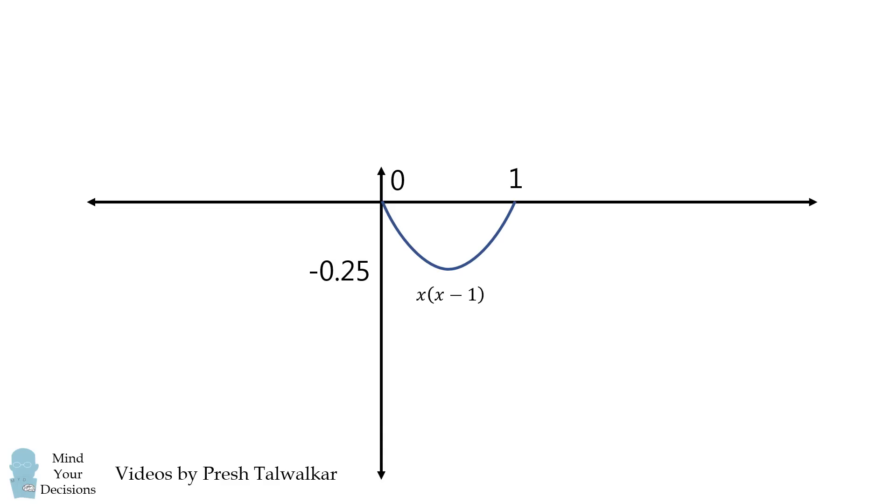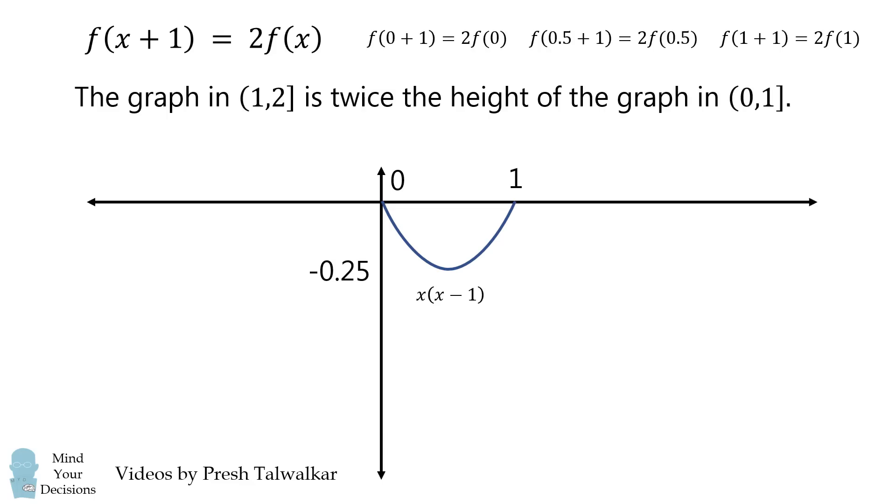Now let's try and graph this function in other intervals. We know that f of x plus 1 is equal to 2 times f of x. Now we can evaluate a couple of points, and we're quickly going to deduce that the graph in the next interval 1 to 2 will be twice the height of the graph in 0 to 1. We're going to shift over this parabola and we're going to multiply it by 2. So this graph is going to look something like this, and this is because of the property that f of x plus 1 is equal to 2 times f of x.